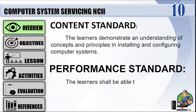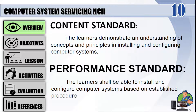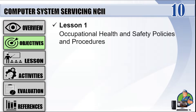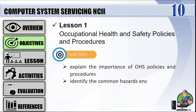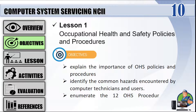Learners shall be able to install and configure computer systems based on established procedures and system requirements. Lesson 1: Occupational Health and Safety Policies and Procedures. Objectives: at the end of the lesson, 80% of the students will be able to explain the importance of OHS policies and procedures, identify the common hazards encountered by computer technicians and users, and enumerate the 12 OHS procedures for computer system servicing.